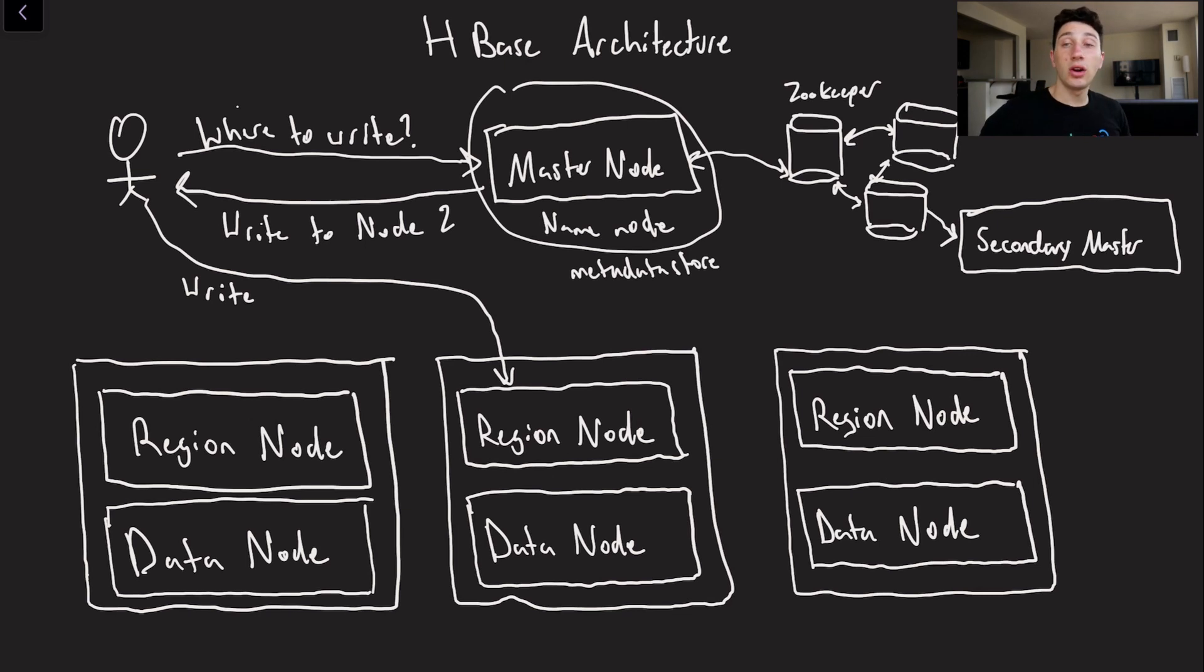It keeps in memory where all of the files that we care about are located, where their replicas are, what versions we have, etc. So basically we've got our client over here on the top left, and whenever a client wants to perform a write to HBase, it basically goes to the master node and says where do we want to write to.